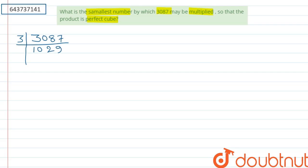Now, sum of digits is 12, so again it is divisible by 3. It will be 343.